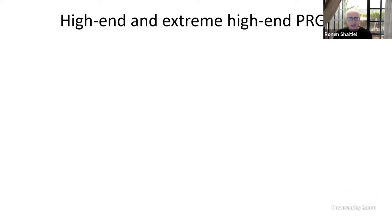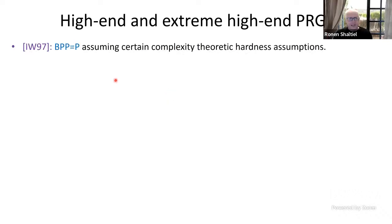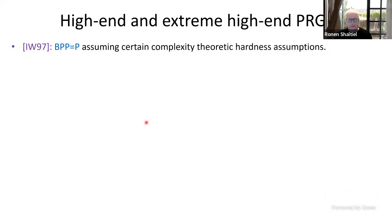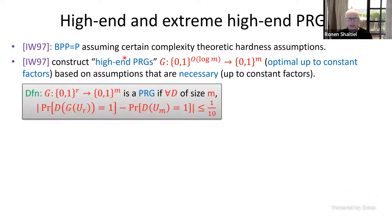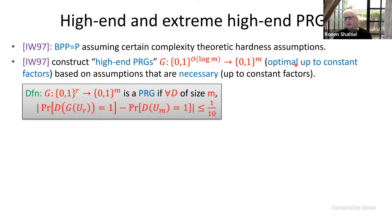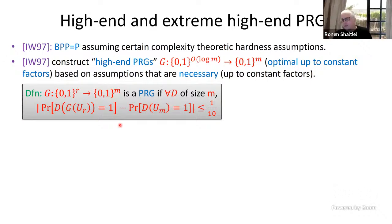In 1997, Impagliazzo and Wigderson showed that BPP equals P, assuming certain complexity-theoretic hardness assumptions. More specifically, they showed how to construct high-end pseudo-random generators — generators that stretch order of log M random bits into M pseudo-random bits. Such pseudo-random generators are optimal up to constant factors and are based on assumptions that are necessary at least up to constant factors.